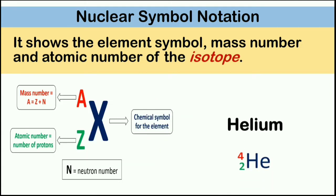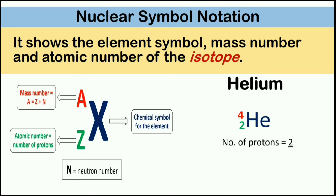Let's have an example: the Helium atom. In this Nuclear Symbol for Helium, please remember that the mass number is always greater than the atomic number. So how are we going to find the number of protons? The number shown in green is the number of protons.